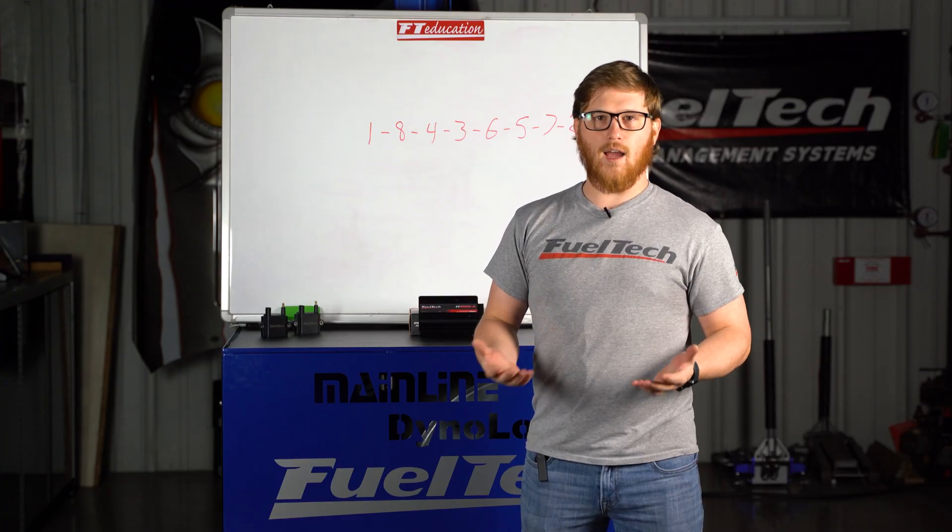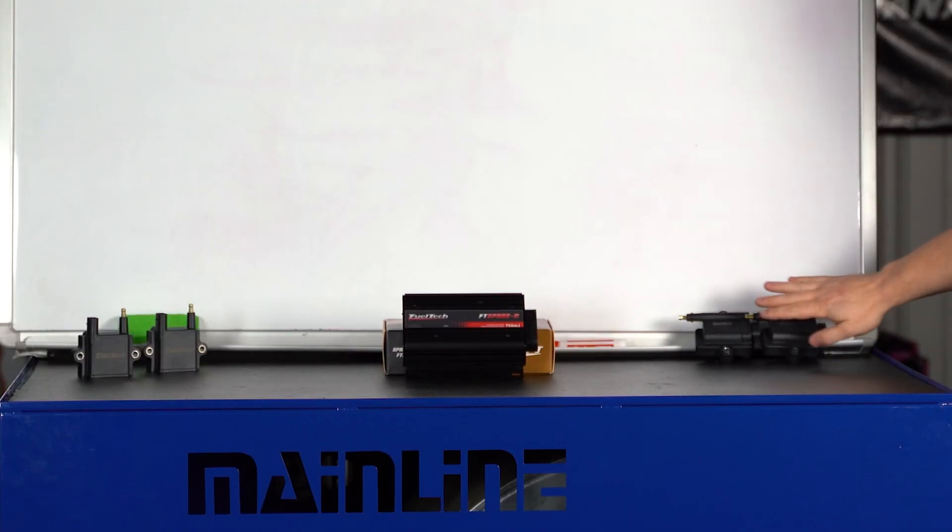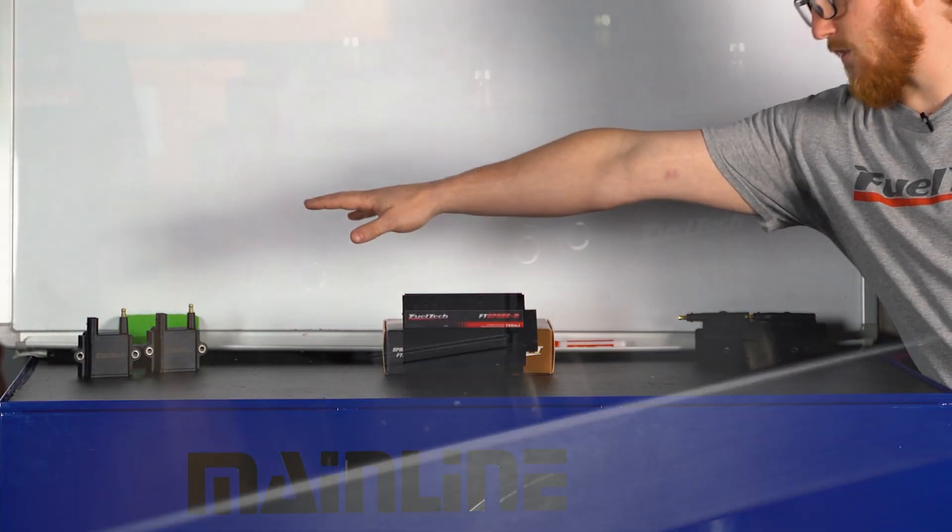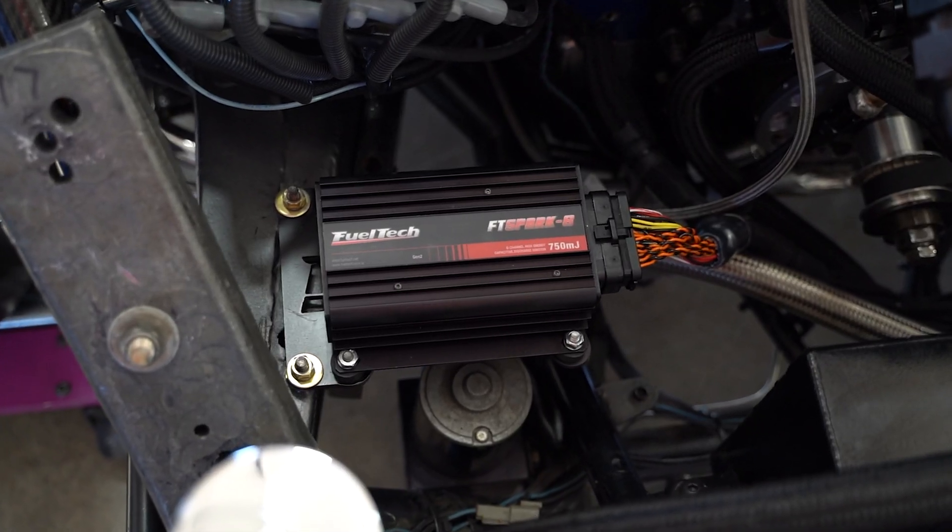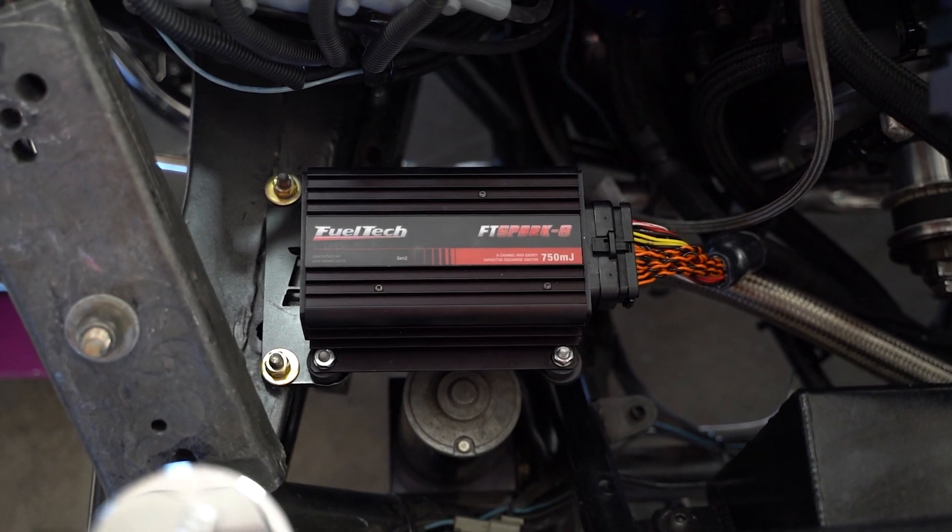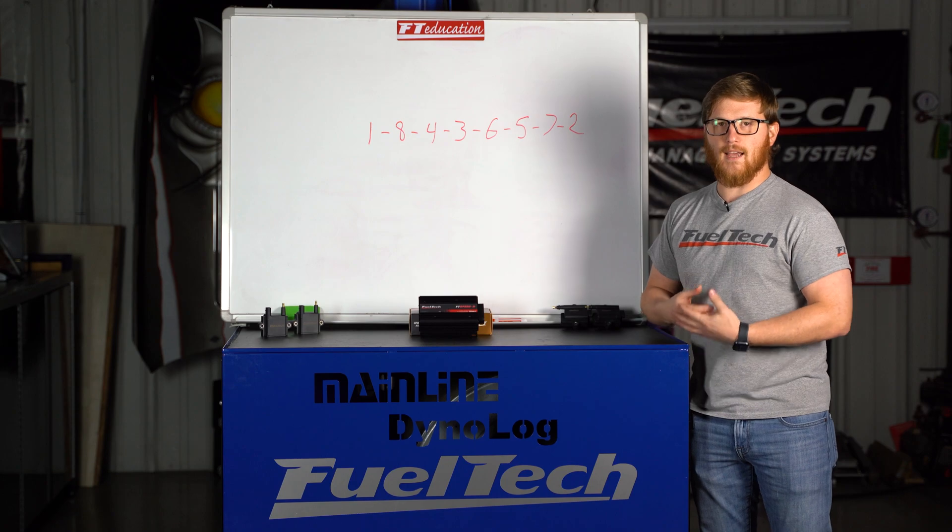Next we have coil-on-plug or coil-near-plug. So I have a couple ignition coils here. These are smart coils and those are the coils that we would use on our FT spark ignition system. So the FT spark is a CDI ignition which stands for capacitive discharge. It's extremely powerful but offers a very short intense spark.